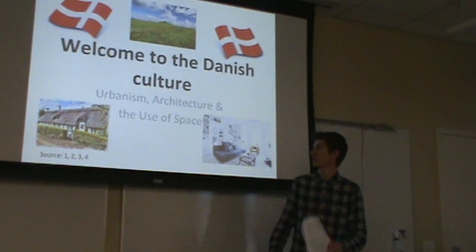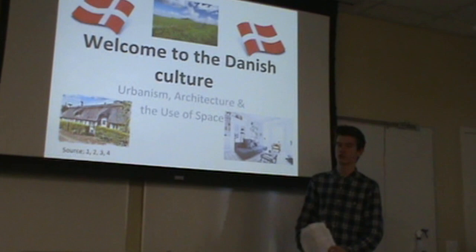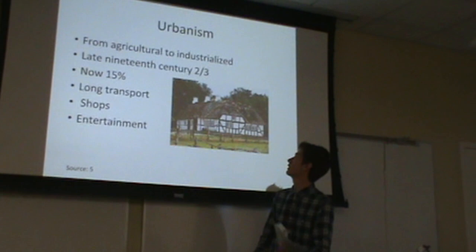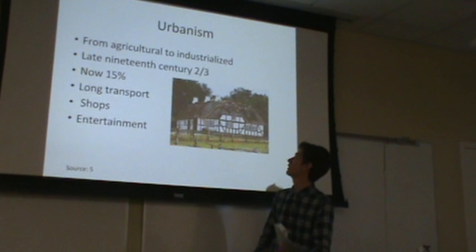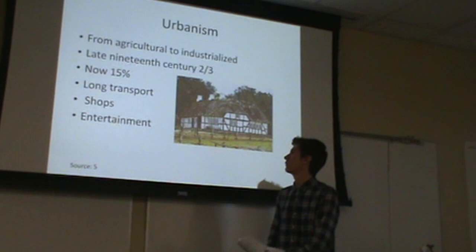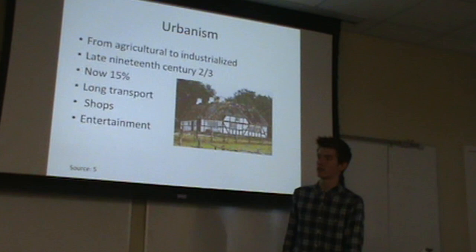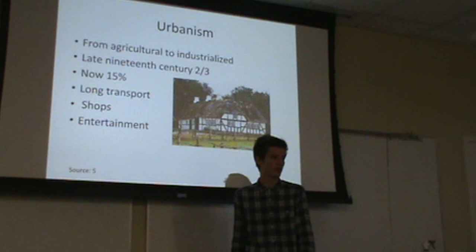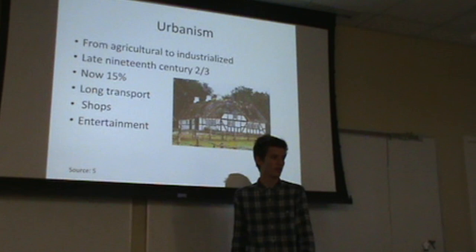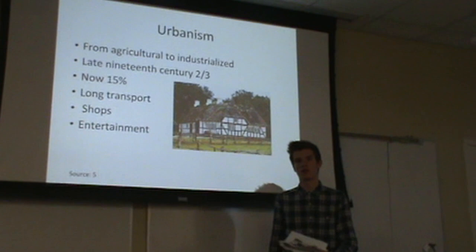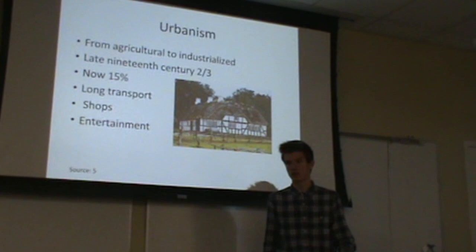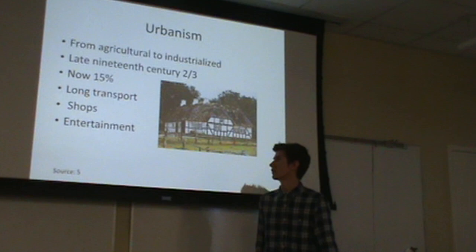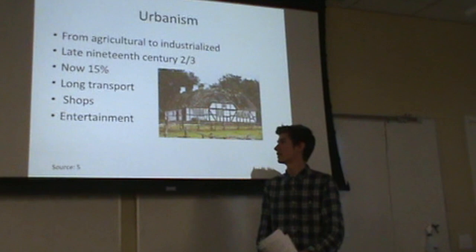My name is Nikolaj and I'm going to talk about Danish culture — specifically urbanism, architecture, and the use of space. We went from being an agricultural country to an industrialized one in the last 50 to 100 years. In the late 19th century, two-thirds of the population lived in rural areas related to agriculture; now it's only 15%. The reason is partly education and jobs moving into the big cities. In 1980 there was a green wave where people went back to nature, but most returned because they were used to having shops and entertainment.